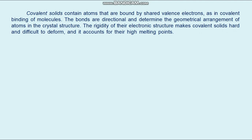Covalent solids contain atoms that are bound by shared valence electrons, as in covalent binding of molecules. The bonds are directional and determine the geometrical arrangement of atoms in the crystal structure. The rigidity of the electronic structure makes covalent solids hard and difficult to deform, accounting for their high melting points. Because there are no free electrons, covalent solids are not good heat or electrical conductors — sometimes, as for silicon and germanium, they are semiconductors. Some covalent solids such as diamond are transparent, while most covalent solids absorb in the visible and are therefore opaque.